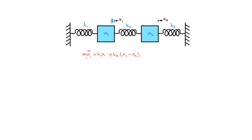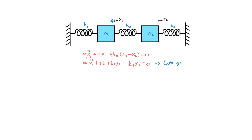This equals zero because we don't have any external accelerating force. Now we have the first equation of motion for m1. You can rearrange the equation to group the stiffness constants with x1 and x2: m1 times x1 double dot, plus (k1 plus k2) multiplied by x1, minus k2 multiplied by x2, equals zero.